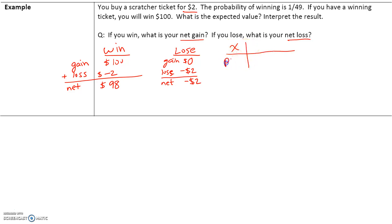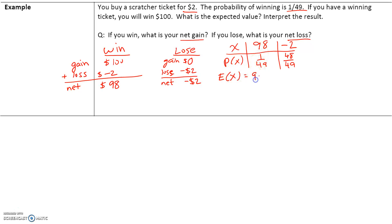Let's write this as a probability distribution. The net gain if you win is $98 and the probability of winning is 1 over 49. The net loss if you lose is negative $2, and the probability of losing is 48 over 49, since probabilities must add up to 1. The expected value is $98 times 1/49, plus negative $2 times 48/49. Multiplying and adding these together, the answer is $0.04.